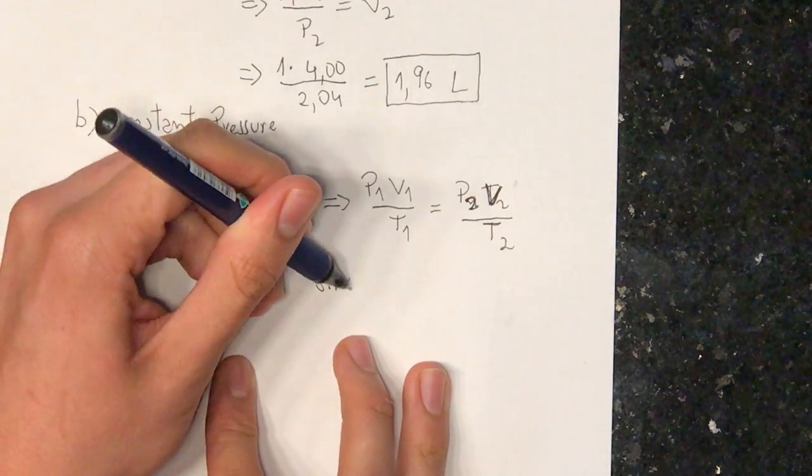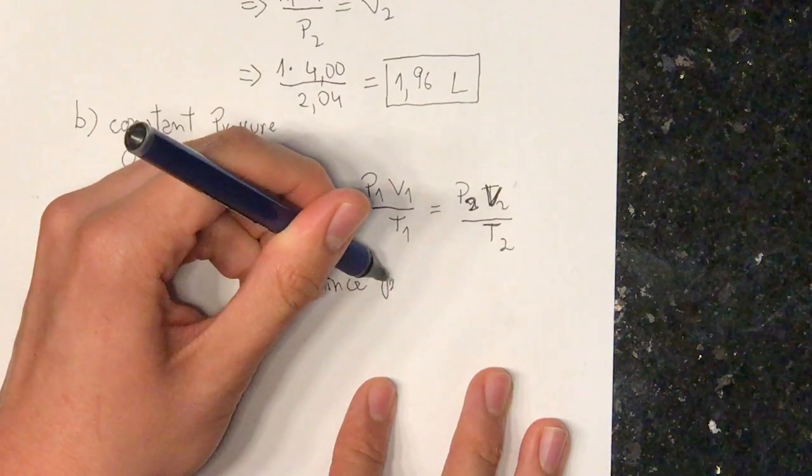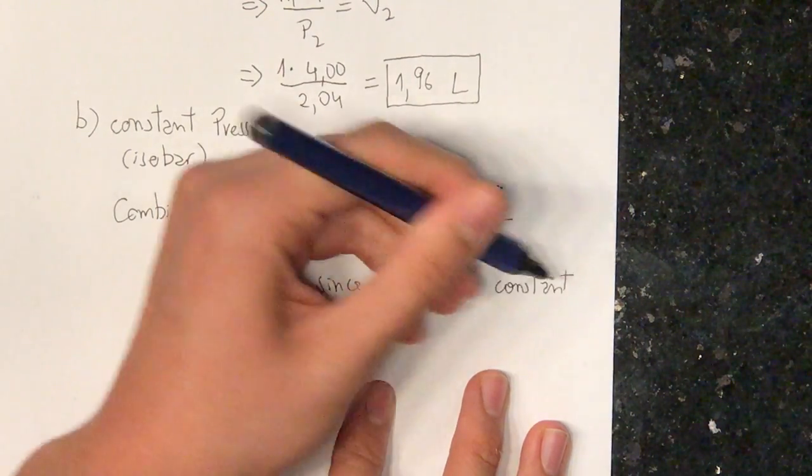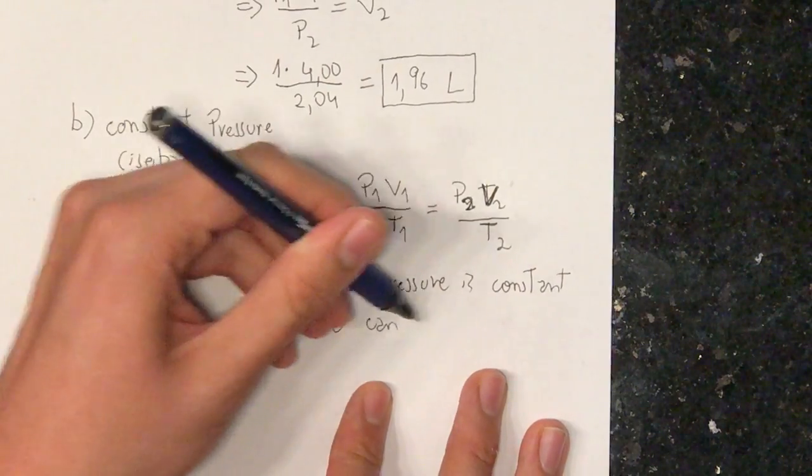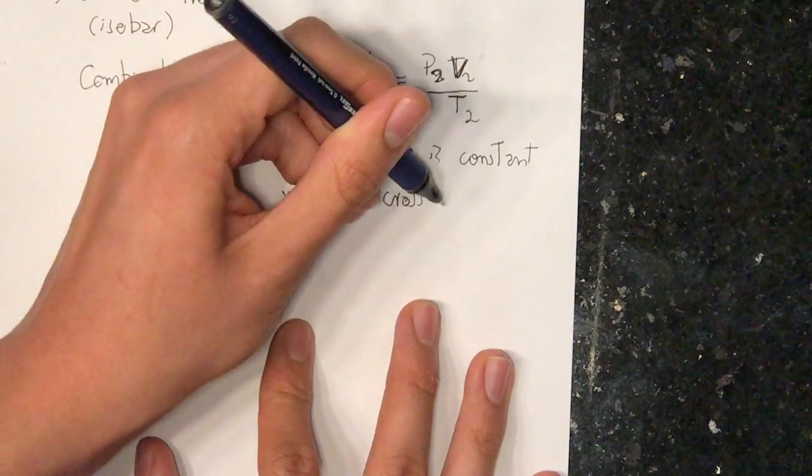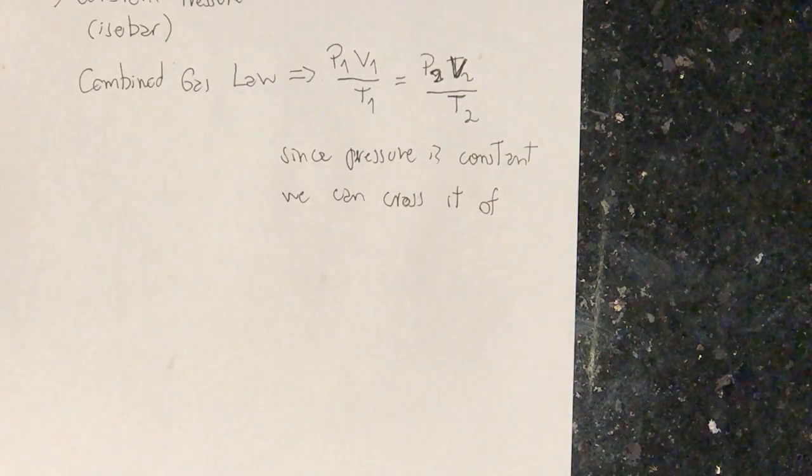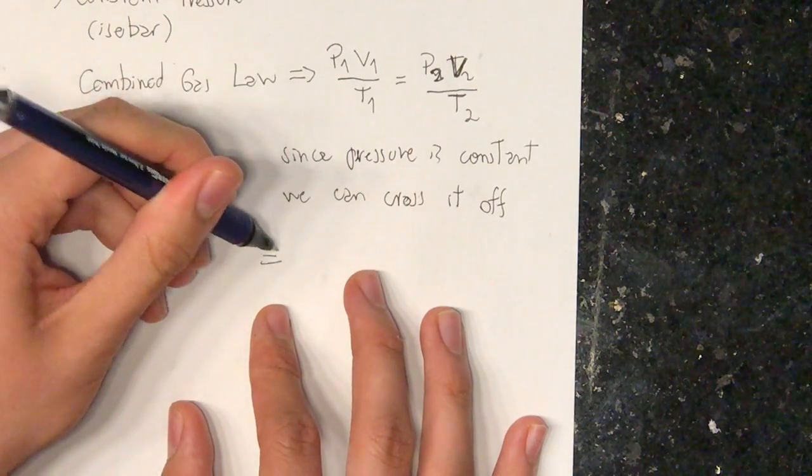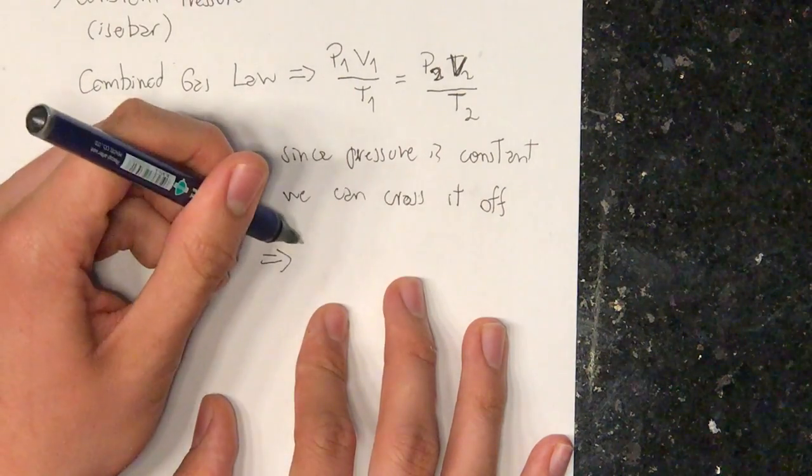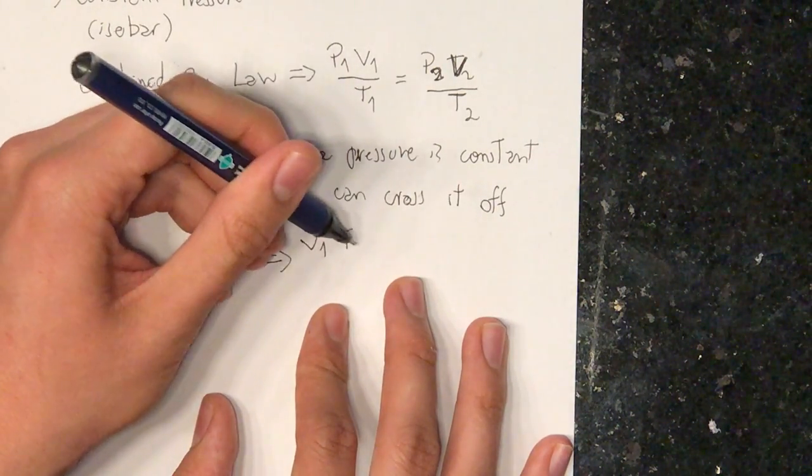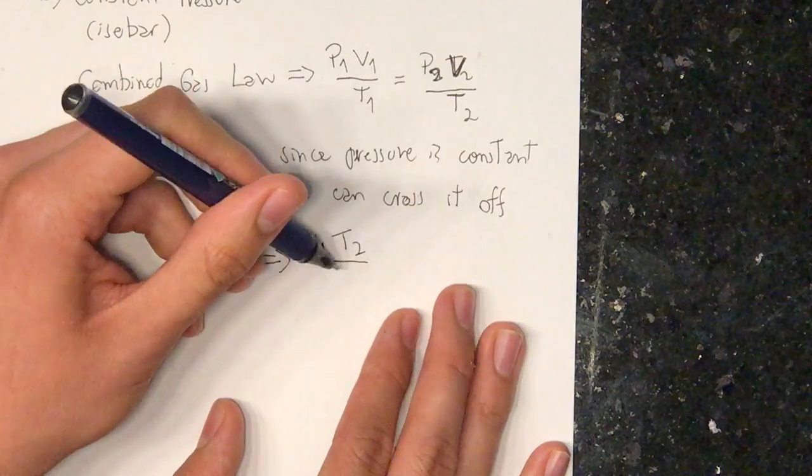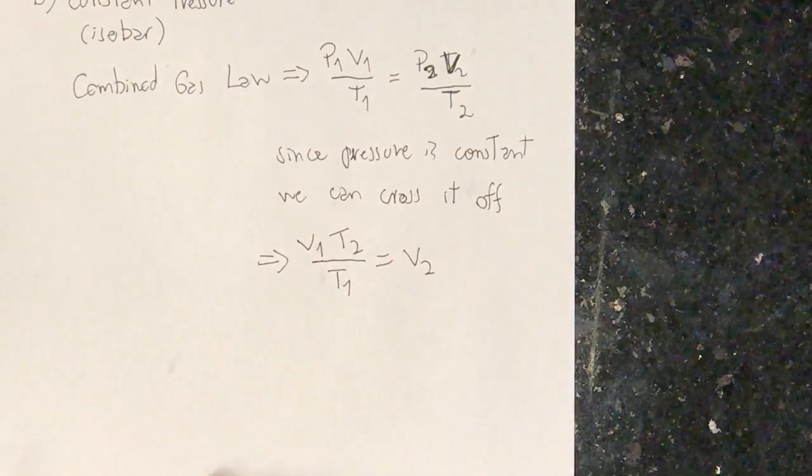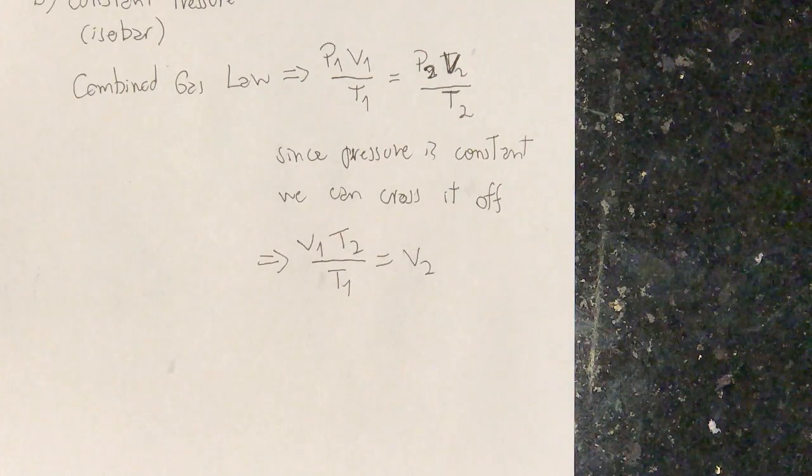Since pressure is constant, we can simply cross it off. When we cross off the pressure, we get V1 times T2 divided by T1 gives us V2, which is in this case also the volume we're looking for.